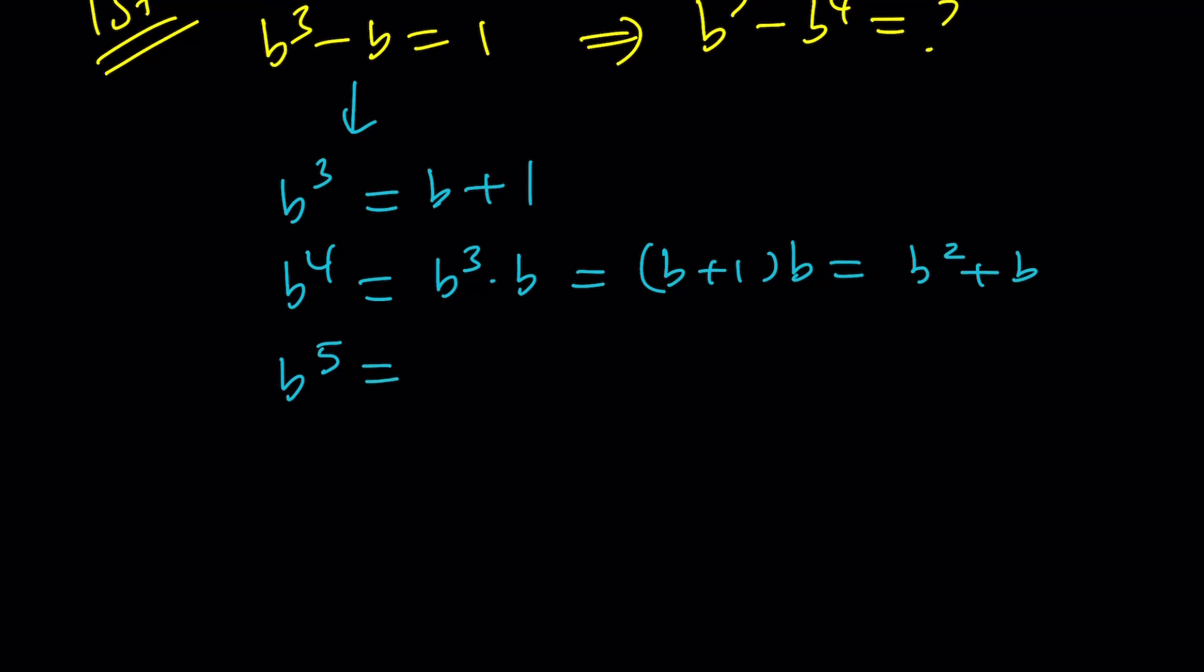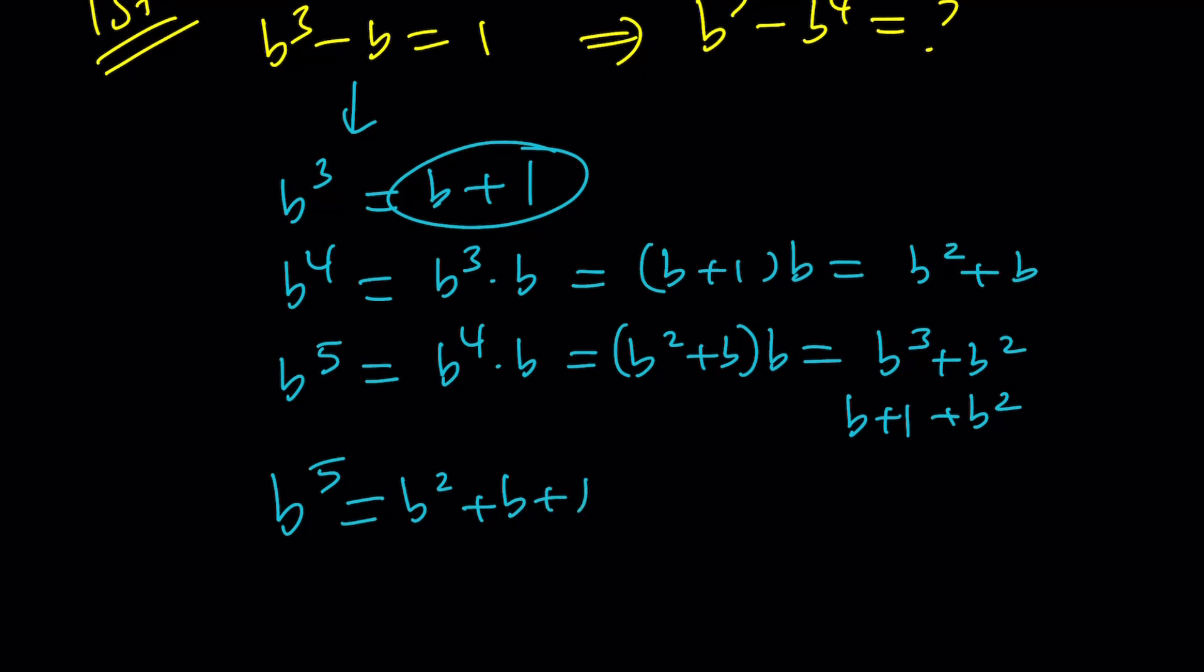b to the fifth is just going to be b to the fourth times b, but b to the fourth is b squared plus b. Multiply by b, you get b cubed plus b squared. But b cubed is always b plus 1. b plus 1 plus b squared. From here, we get b to the fifth is b squared plus b plus 1. And b to the fourth equals b squared plus b.